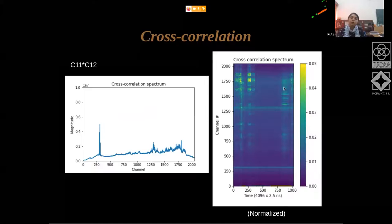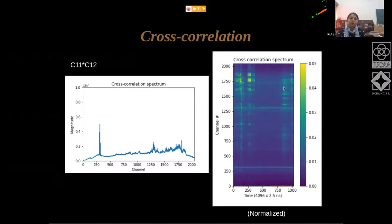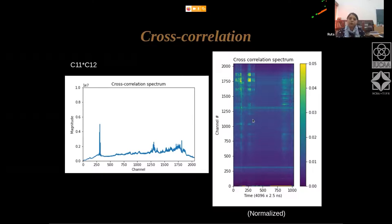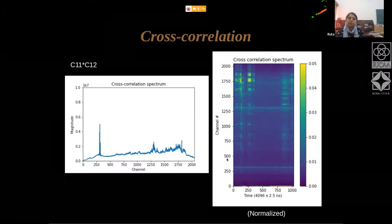Similarly, you can do a cross-correlation. You have two data files containing C11 and C12 data, so you could take a Fourier transform of each and make a cross-correlation spectrum. You can then compare the autocorrelation and cross-correlation spectra to see which channels show differences.